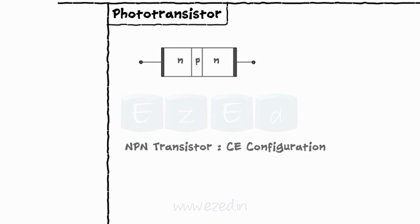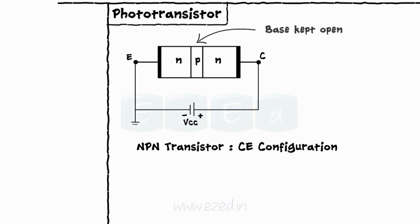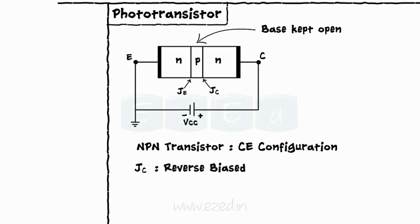Phototransistor is a light sensitive device consisting of an NPN transistor in CE configuration with the base of the transistor open, as indicated in the figure. A direct voltage VCC is applied between the emitter E and the collector C so that the collector junction JC is reverse biased and the emitter junction JE is just forward biased.